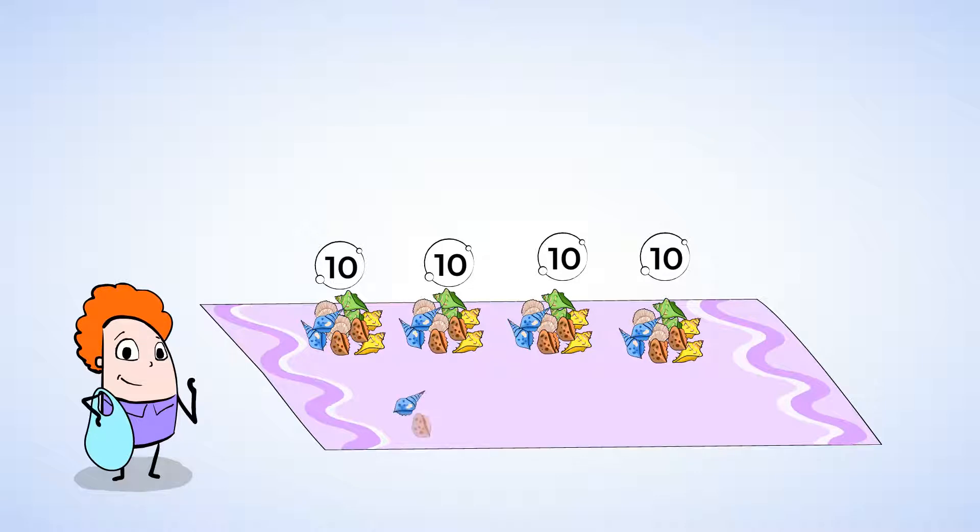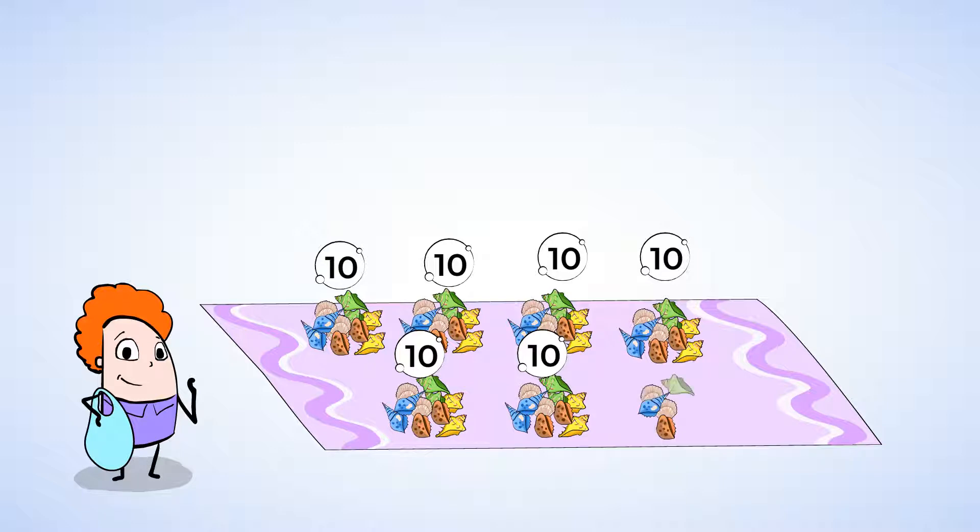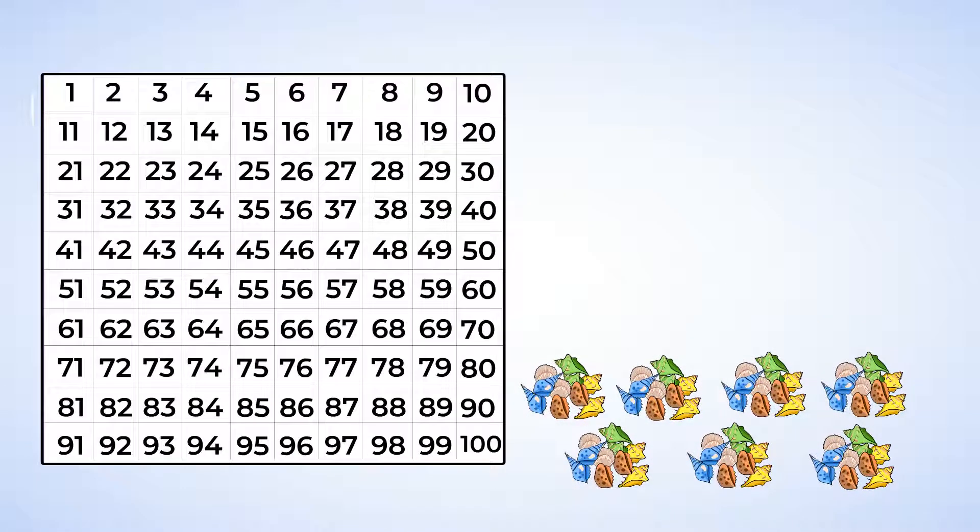1, 2, 3, 4, 5, 6, 7, 8, 9, 10. Great. Now let's make another pile of 10. 1, 2, 3, 4, 5, 6, 7, 8, 9, 10. Okay, almost there. One more pile to count out. 1, 2, 3, 4, 5, 6, 7, 8, 9, 10. Nice. Now we have all the shells in piles of 10. And we can put these piles next to our hundreds chart.